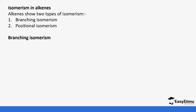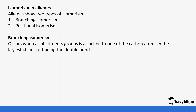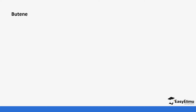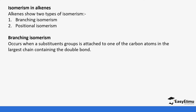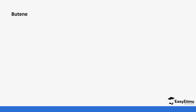We will start with branching isomerism. It occurs when a substituent group is attached to one of the carbon atoms in the largest chain containing the double bond. We will start with butene to see how many branching isomers it has.